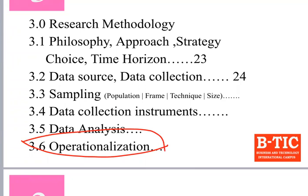Operationalization is about mapping your research questions to the questionnaire items that measure them. If you have three independent variables with three research questions each, and each question has three or four questionnaire items, you have to map which question is measuring which variable. I will show you a sample so it is easy for you to replicate.